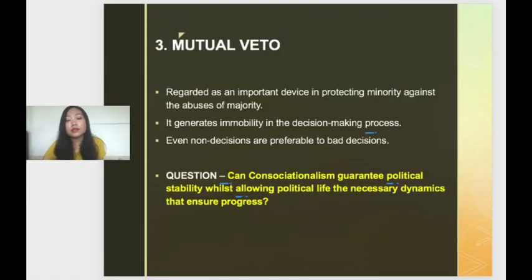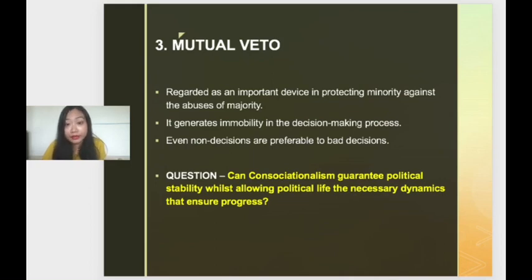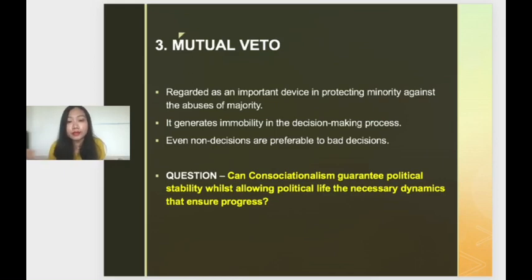The next concern relates to mutual veto. The mechanism of a mutual veto is regarded as an important consociational device for protecting minorities against the abuses of the majority. However, the potential of the mutual veto for fostering political stability has been questioned on the grounds that it generates immobility in the decision-making process. The consociationalist response is that even non-decisions are preferable to bad decisions, but this merely compounds the controversy about whether consociationalism can ensure long-term political stability whilst allowing the necessary dynamics for progress.